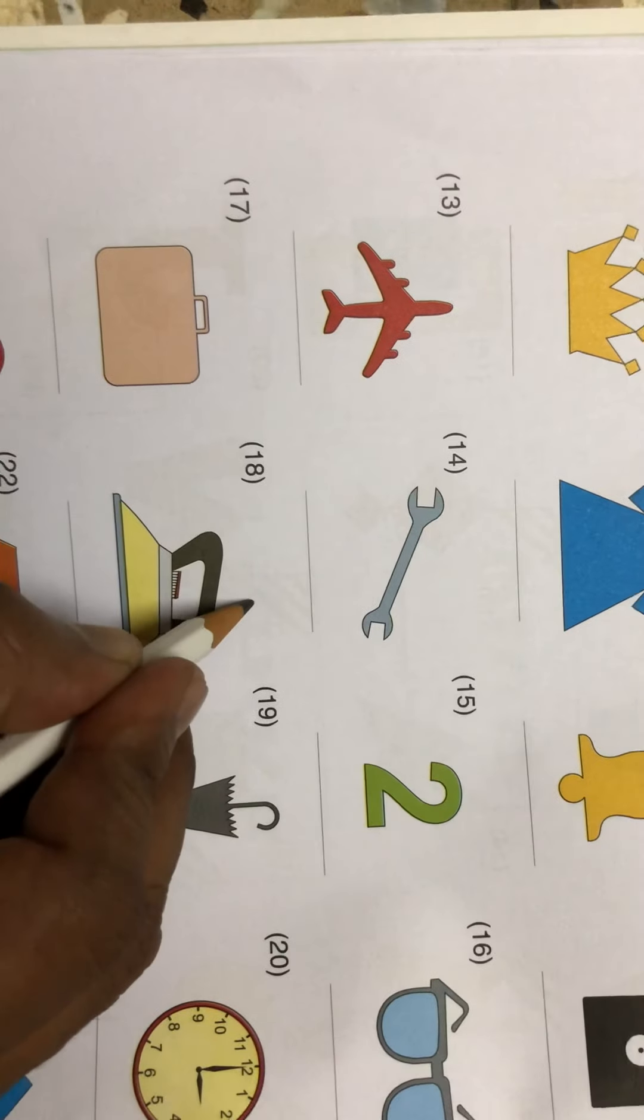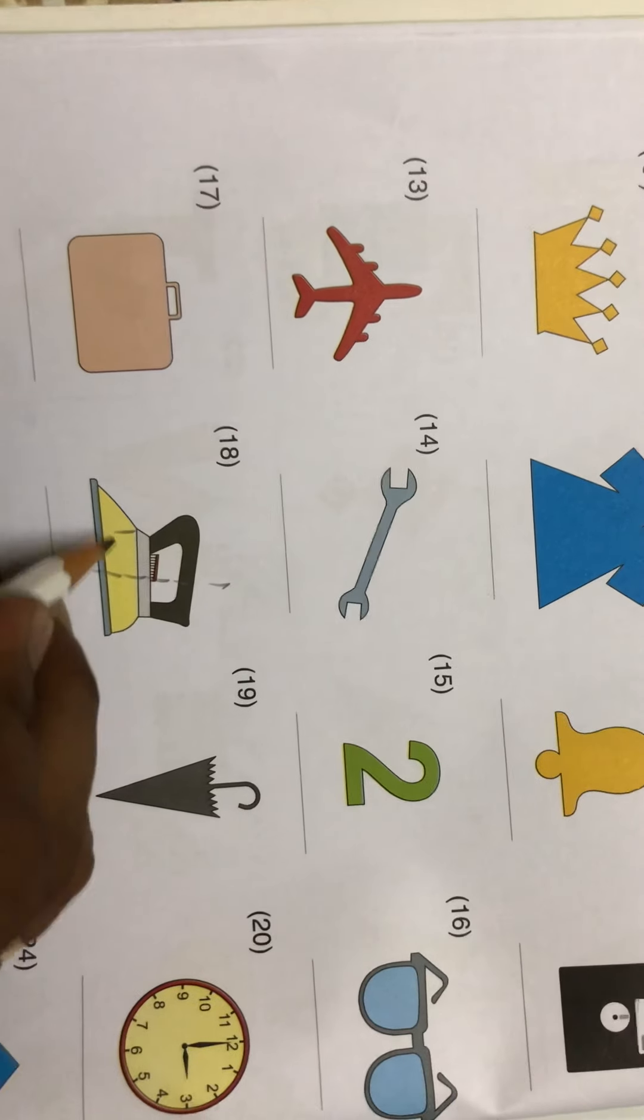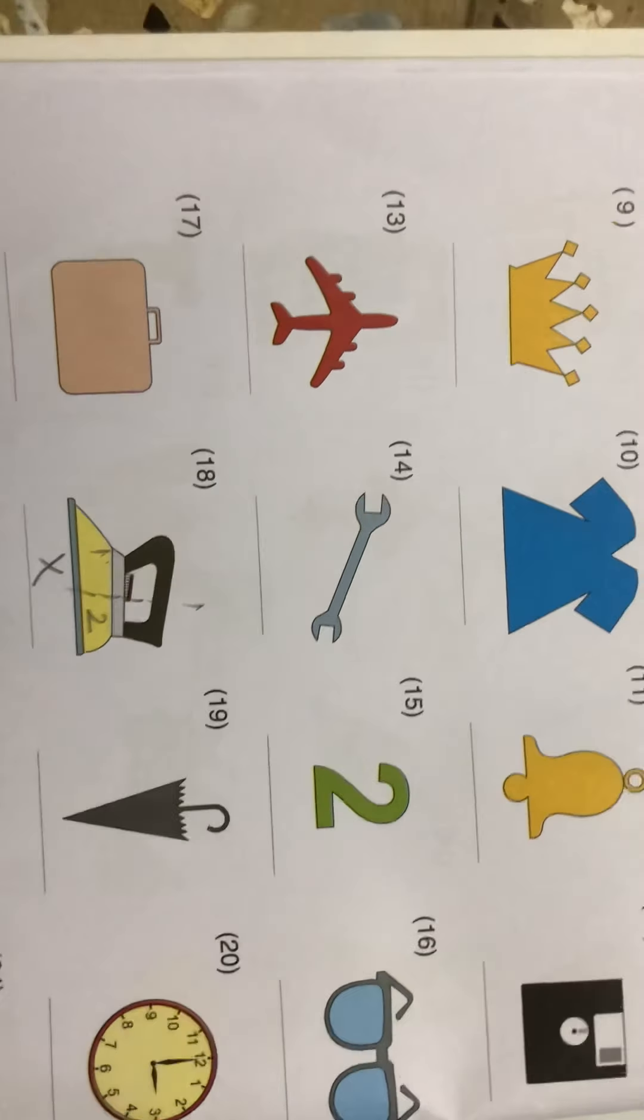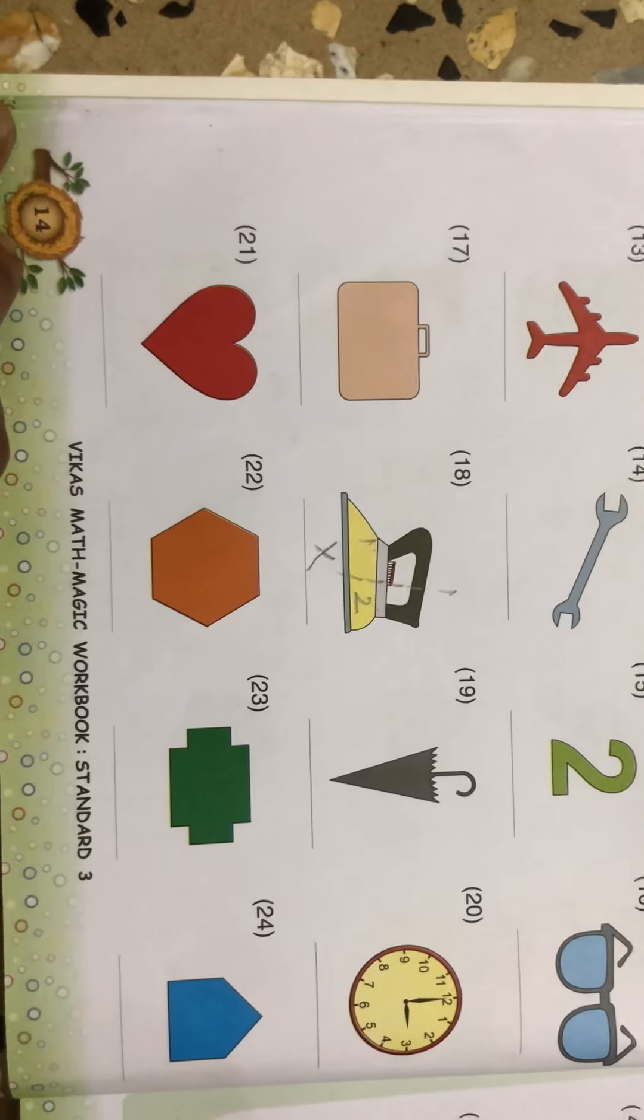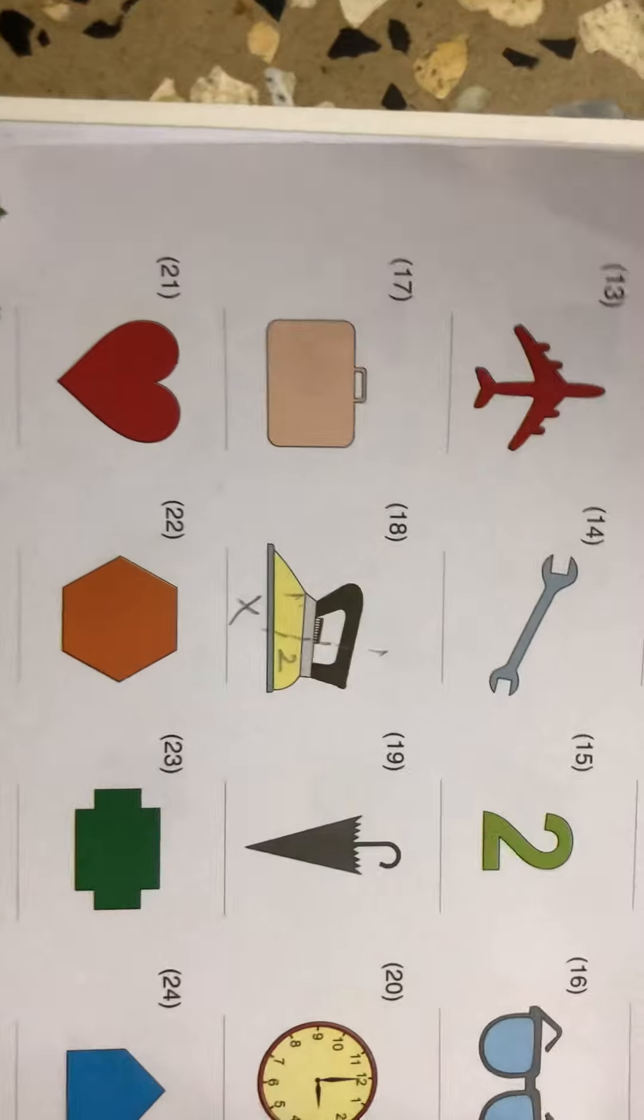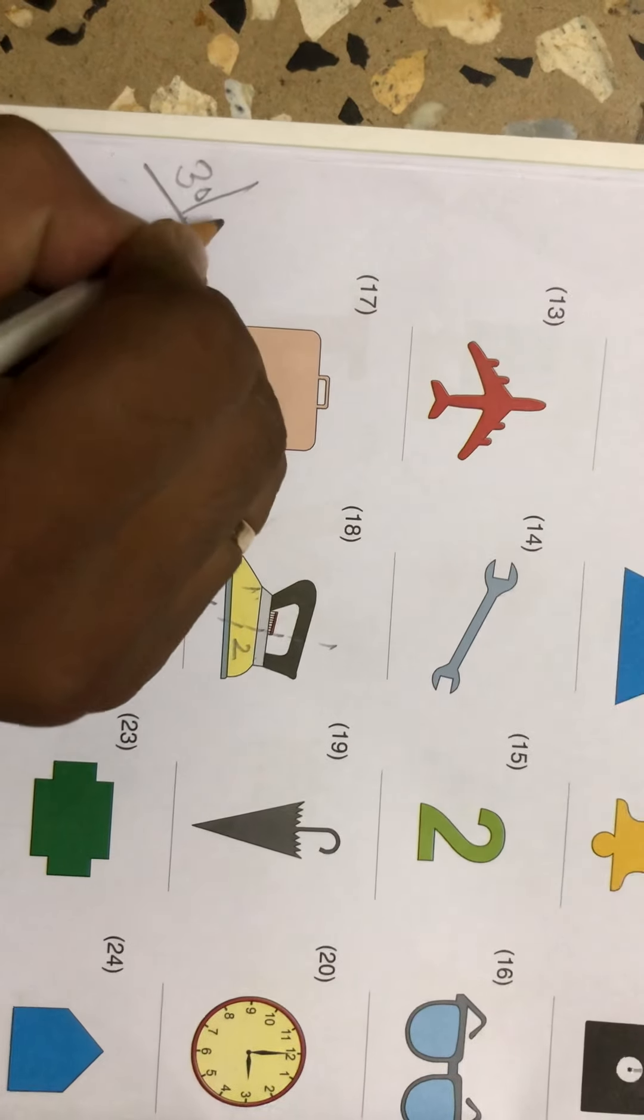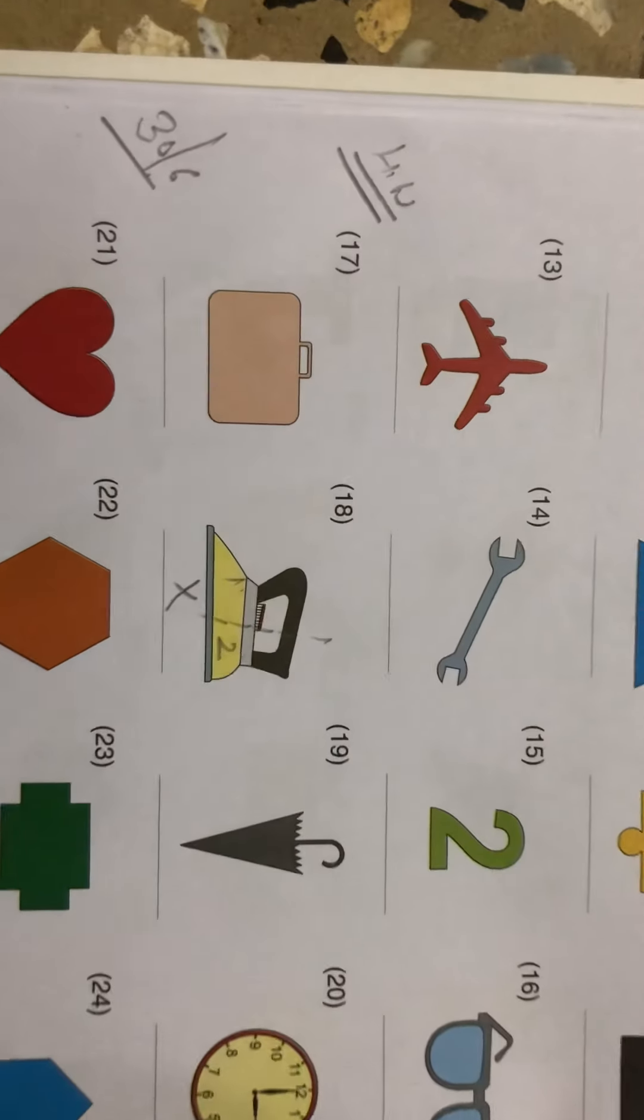If I divide it from here, it is not symmetrical. Because it is one and two parts, but they are not same. So you have to cross it. So you have to complete till page number 14. This is your homework. Complete it. Bye, take care.